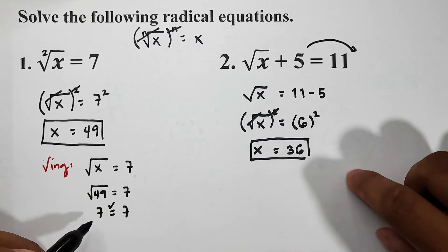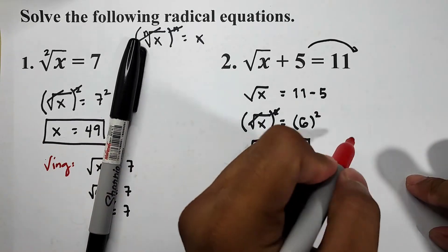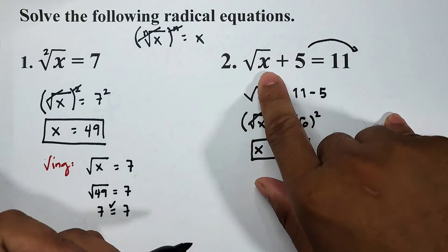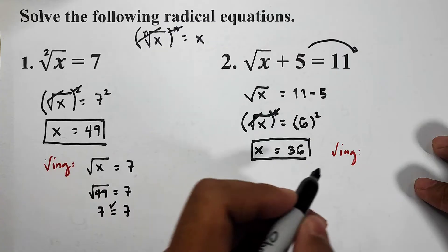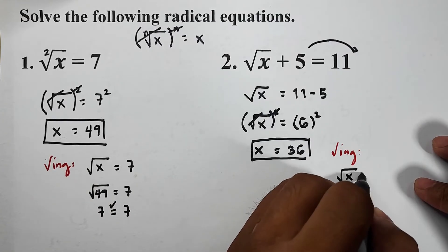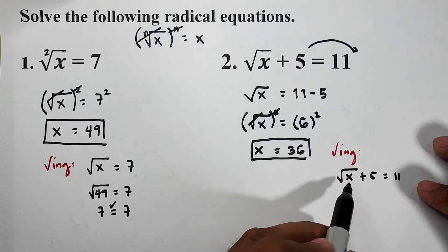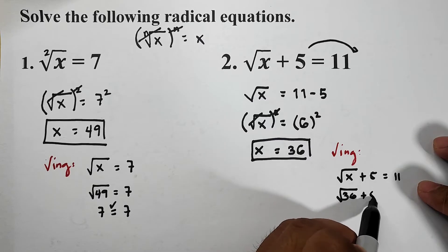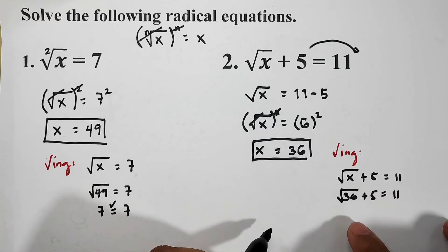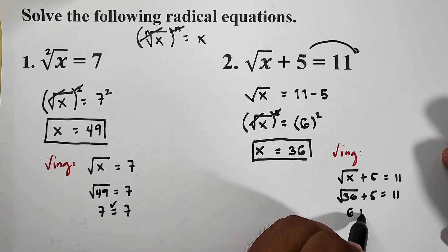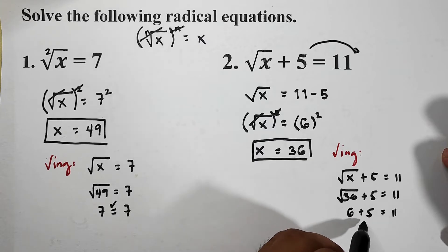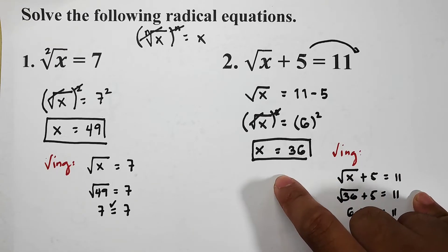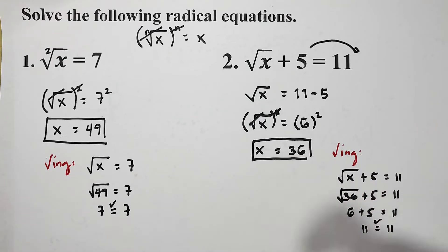Now let's do checking for item number two. Our equation is square root of x plus five is equal to 11. We replace x with 36: square root of 36 plus five is equal to 11. The square root of 36 is 6, so 6 plus 5 is equal to 11, which equals 11. Since they are equal, the value of x is correct. Let's move on with the other examples.